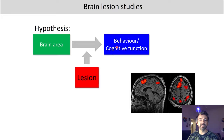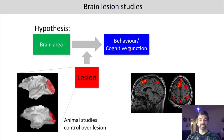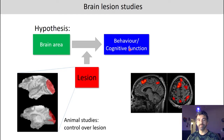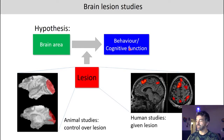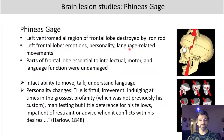If that brain area is actually involved in the behavior or cognitive function — in animal studies we have control over the lesion, so we can decide which part of the brain to remove or affect. In human studies we cannot do that, but we have lesions given, for example, due to strokes or injuries.